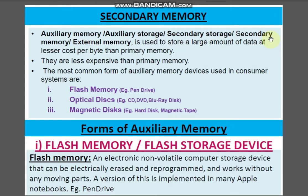Secondary memory, auxiliary memory, auxiliary storage, secondary storage, and external memory — they are all the same. They are used to store a large amount of data at lesser cost per byte than primary memory. The most common types are flash memory, optical disc (CD, DVD, Blu-ray), magnetic disc (hard disk), and magnetic tapes.